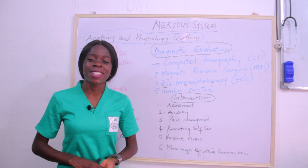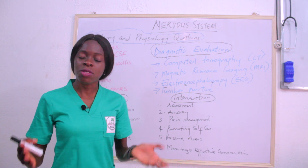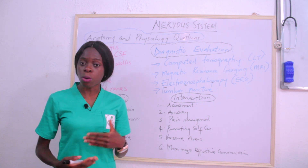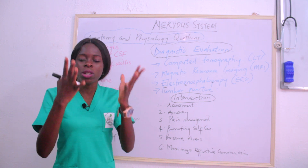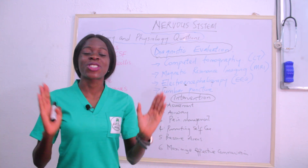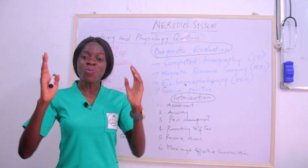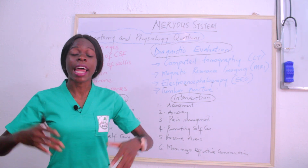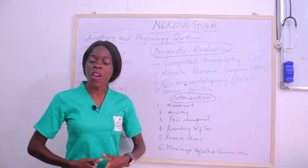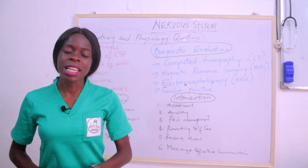You must also address pain management — pain brought the patient to the hospital, so provide diversional therapy, prescribed analgesics, and cold or hot compresses. Promote self-care so patients can maintain independence. For unconscious patients — those with brain injury, brain tumors, or stroke who may be in a comatose state — you must treat pressure areas, provide oral care, and give bed baths to maintain hygiene and skin integrity.